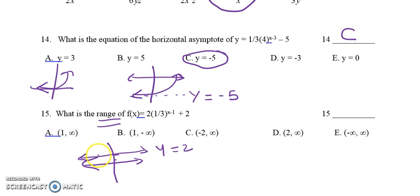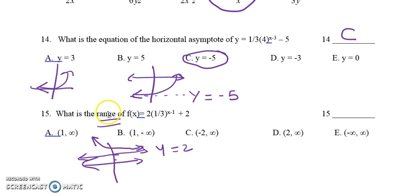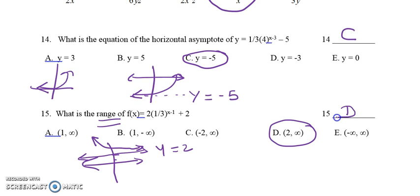Since this is a decay, the graph approaches the asymptote at y equals 2 but never crosses it. The range — the y values — has a lowest value approaching 2 and goes up to infinity. Since 2 is not included, it uses a parenthesis. Therefore the answer is D, with the range being (2, infinity).